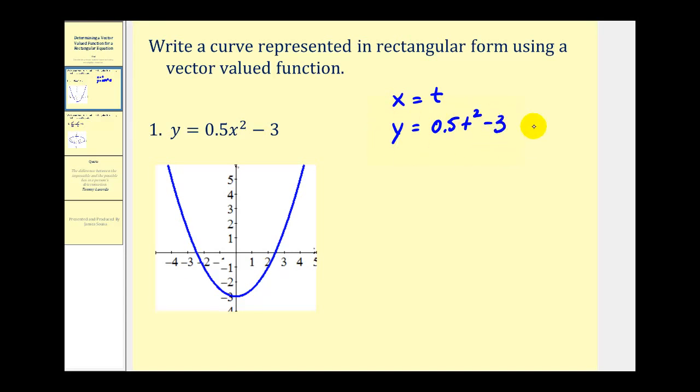Now that we have the parametric equations for this curve, we can express this as a vector-valued function where vector r of t is equal to t times the unit vector i plus 0.5t squared minus 3 times the unit vector j. Or in component form, we would have t, 0.5t squared minus 3.